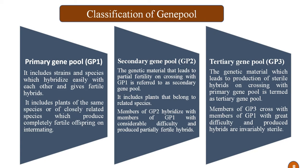Now the classification of the gene pool. The gene pool is classified into three forms: primary gene pool GP1, secondary gene pool GP2, and tertiary gene pool GP3. The primary gene pool includes strains and species which hybridize easily with each other and give fertile hybrids — plants of the same species or closely related species that produce completely fertile offspring on interbreeding. The secondary gene pool is the genetic material that leads to partial fertility on crossing with gene pool 1. It includes plants belonging to related species, and members hybridize with members of GP1 with considerable difficulty, producing partially fertile hybrids.